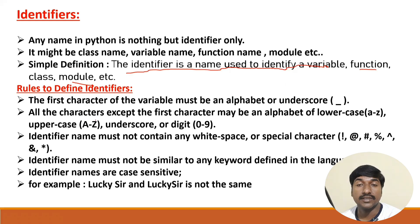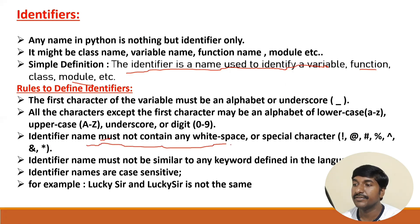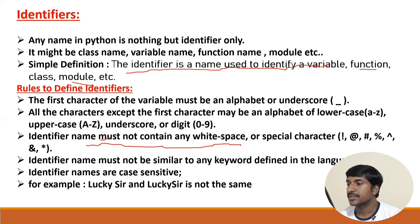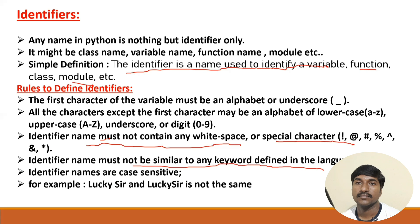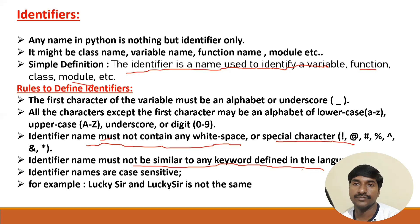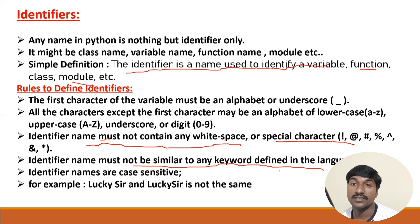One more rule: an identifier name must not contain any whitespace. Whenever you are defining any variable or any name it should not contain a space or any other special characters. Another rule: an identifier name must not be the same as any keyword defined in the language — identifier names must not be keywords. So since there are 33 or more keywords in Python, you should not declare those keywords as identifiers. Also, identifier names are case sensitive.